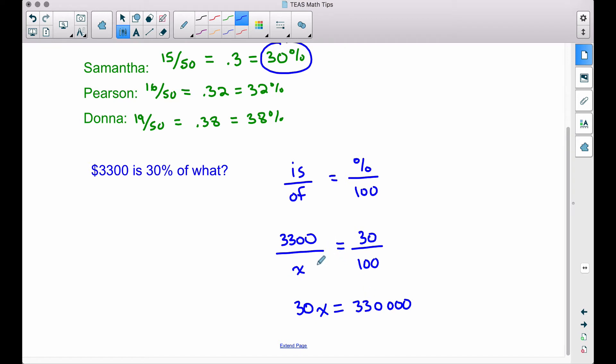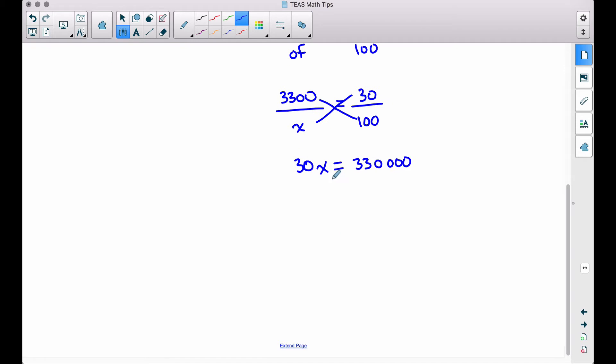Now I've put this extra step in here to show you the cross multiplying: x times 30, there's our 30x. 3,300 times 100 is this 330,000. Now this extra step in here, hopefully you would be skipping this with time to save time on the TEAS test, but I did mention, you know, we're going to divide by 30 because we're trying to get x by itself.